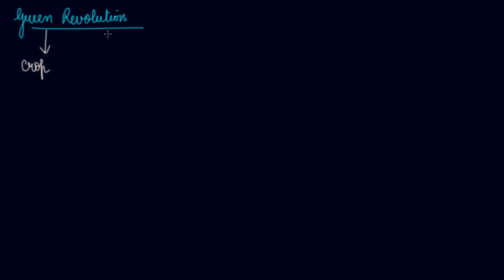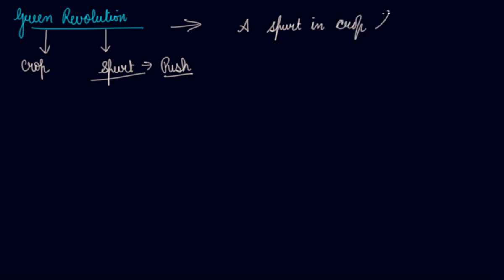In this video we will be studying about the Green Revolution in India. Green means crop whereas revolution means spurt, and spurt means a push or a substantial increase in production. Revolution is a push — the action you take and the result you see within a smaller period of time. So 'green' refers to crop and 'revolution' refers to the spurt; together they simply imply a spurt in crop production.